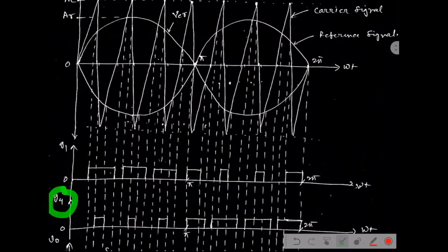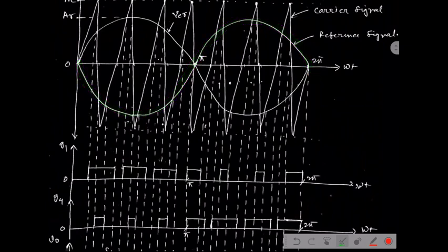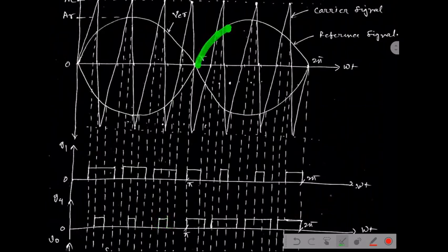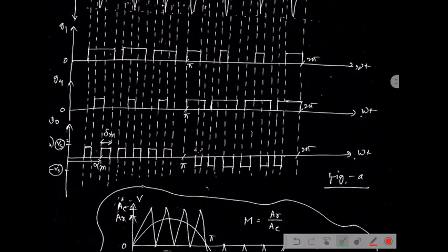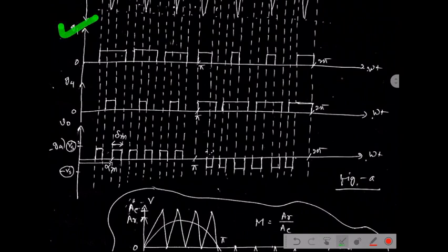For switch S4, the gate pulse G4 follows the same process using the second sinusoidal signal. We identify where this signal coincides with the carrier triangular signal. At each pair of coincidence points a pulse is generated. Following each starting and ending coincide point across the waveform, we build all pulses for G4. Ultimately, we obtain two triggering pulse waveforms for switch S1 and switch S4.